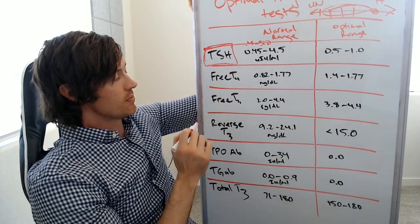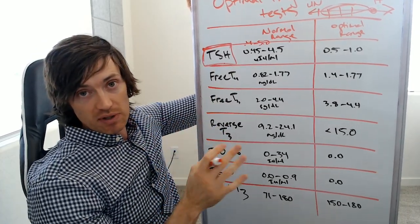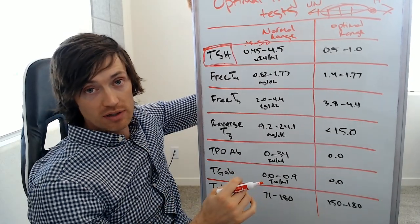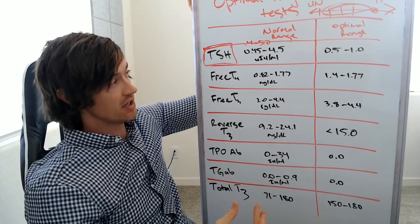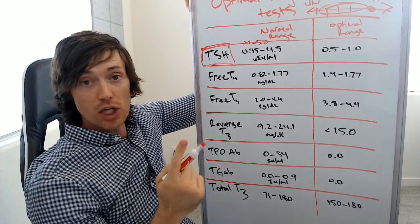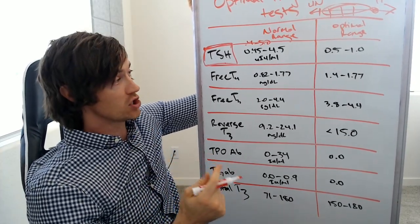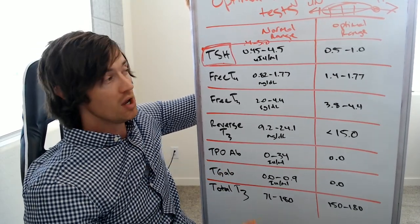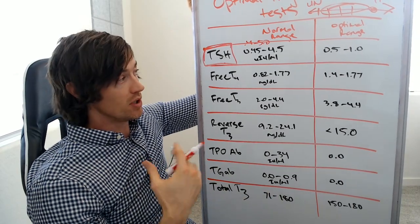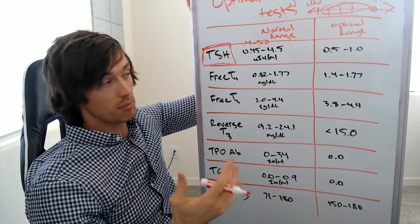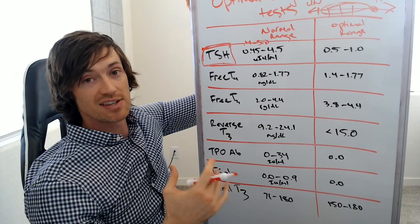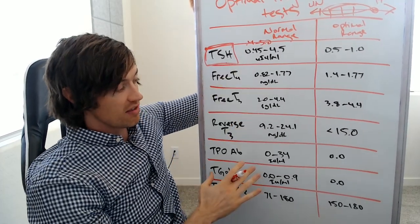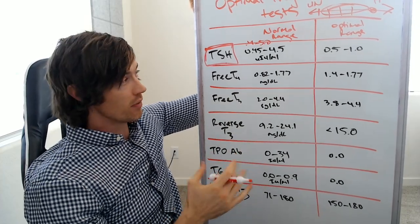The first one is TSH — thyroid stimulating hormone. It is important, but it is not the single most important thyroid lab test. Many doctors act as if it is, but that is not necessarily true. It does provide good information and it should be tested. It's especially helpful if you're trying to diagnose thyroid problems for the first time. Where it falls flat is when you're using it to test how much medication you need. If your doctor is using it alone, without any of these others, you're going to run into problems.